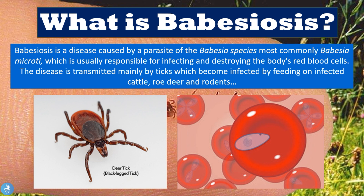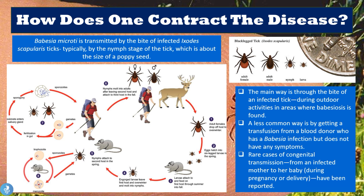Now that we know the basics of Babesiosis, let's take a closer look at how one can contract this disease. Babesia microti is transmitted by the bite of infected ticks, and the main species of this tick is called Ixodes scapularis. This is actually what these ticks look like — it's called a black-legged tick or the deer tick.